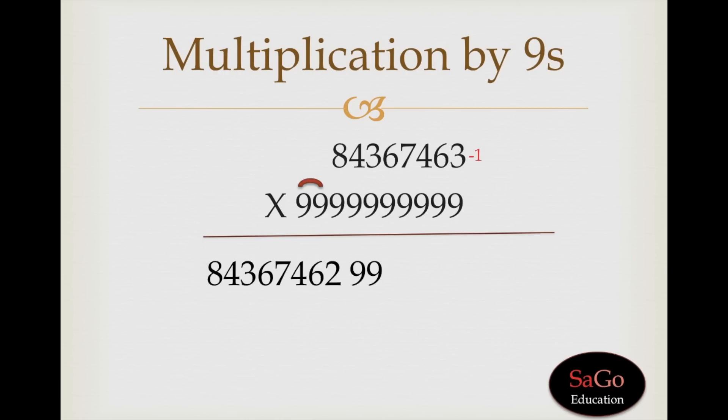And now, the last and the third step is to subtract the upper digit by all from 9 and last from 10 method. When we subtract the upper digit by all from 9 and last from 10 method, we will get this digit. So, this is the complete answer.